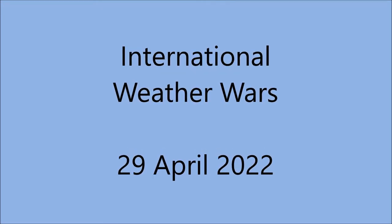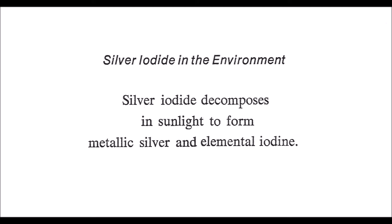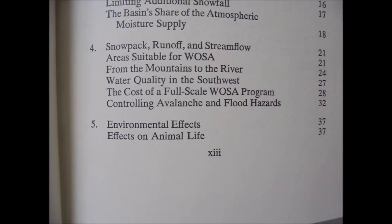Welcome along to another video. This time I'm going to take a look at this book from 1974 — about 45 years ago — 'Snowpack, Cloud Seeding and the Colorado River: A Technology Assessment of Weather Modification' by Leo Weisbecker. This book covers what the effects of the winter orographic snowpack augmentation program throughout the Upper Colorado River Basin will potentially be. This program was due to be implemented after a five-year pilot project, so we're talking about 25 years after the wider implementation of silver iodide cloud seeding for weather modification purposes.